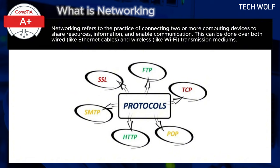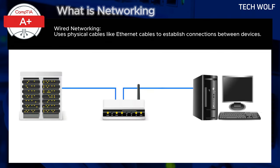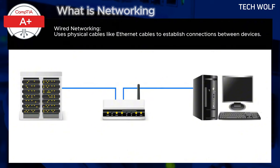There are two types of networking: wired networking and wireless networking. Wired networking uses physical cables like Ethernet cables to establish connections between devices. These wired connections typically offer faster and more reliable data transmission compared to wireless networks.